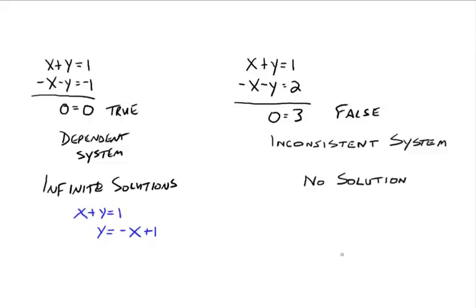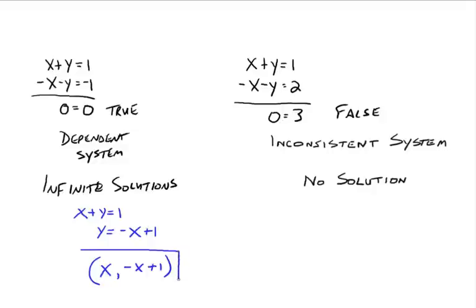What this means is we're writing y in terms of the variable x. If we know a value for x, we plug that value in and it tells us the corresponding y value. The y value depends on whatever we pick for the x value. So what do the ordered pairs look like? We can let x be anything, so we let it be x. The y values then have to be negative x plus 1. So all the ordered pairs are of the form (x, negative x plus 1).